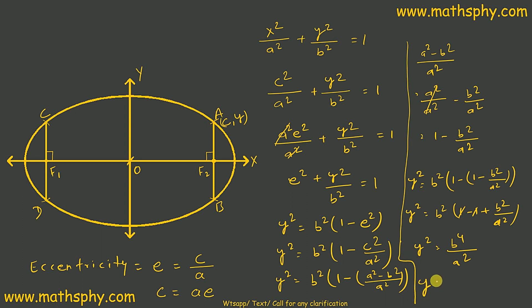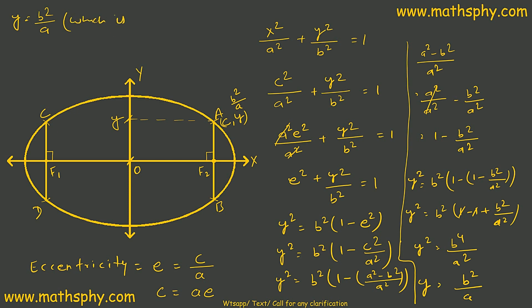Therefore y = b²/a. This value of y is the length of AF2 — that is, the distance from point A to focus F2.